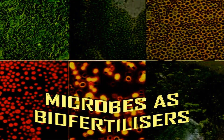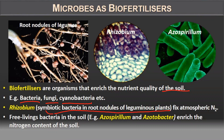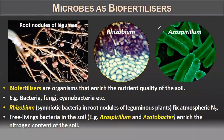Microbes as biofertilizers: biofertilizers are organisms that enrich the nutrient quality of the soil. Examples are bacteria, fungi, and cyanobacteria. Rhizobium is a symbiotic bacterium that lives in the root nodules of leguminous plants and fixes atmospheric nitrogen. Free-living bacteria such as Azospirillum and Acetobacter enrich the nitrogen content of the soil — unlike Rhizobium, which lives in root nodules, these are free-living bacteria.